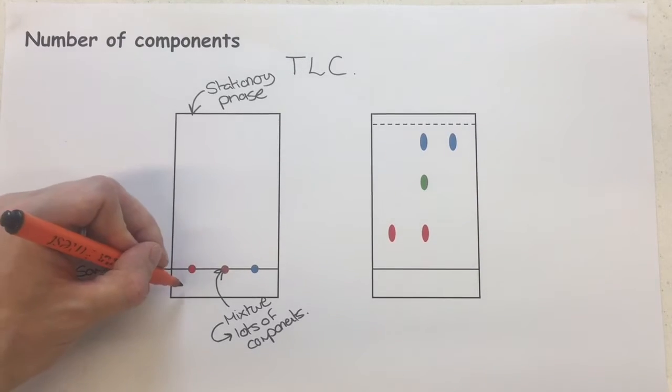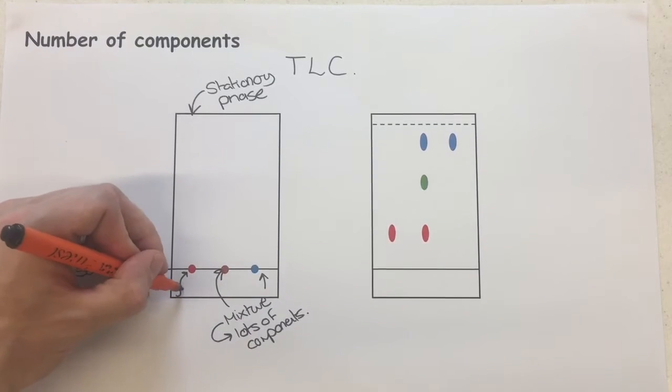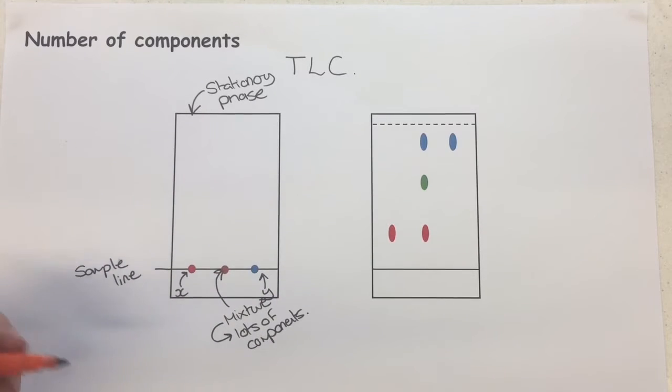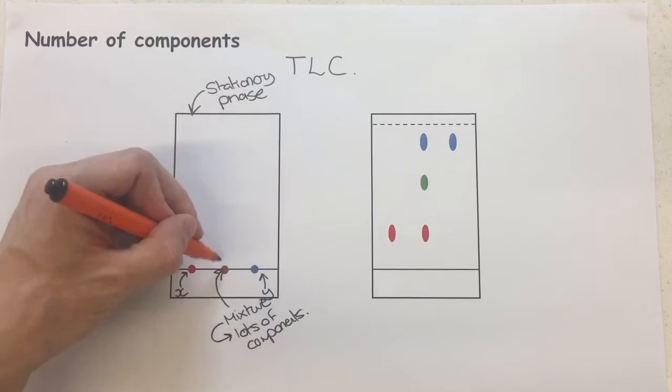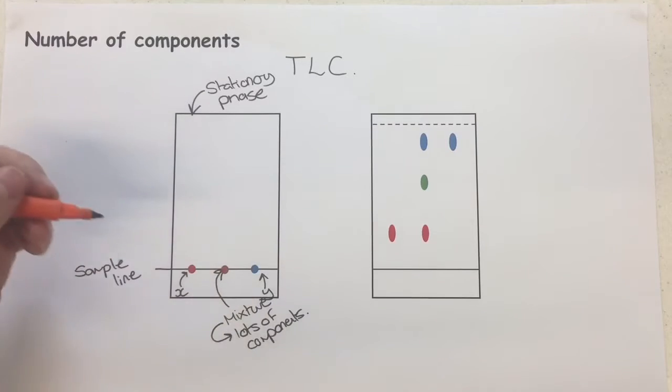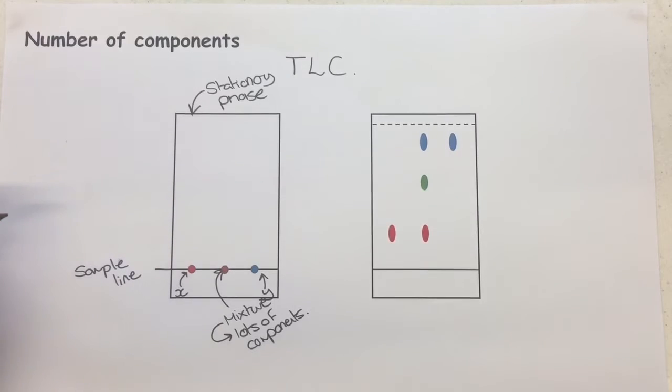What I've also got on here are samples of two pure samples of organic compounds X and Y. What I'm going to be able to do by running this mixture alongside X and Y is to see if the mixture contains X or Y, which allows me to identify parts of it and also look for bits that aren't X and Y and try and do some follow-up with that.